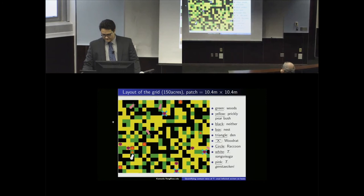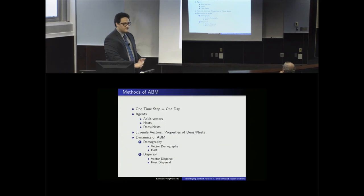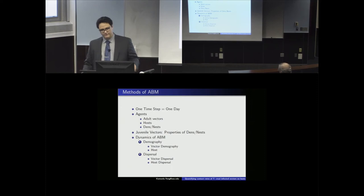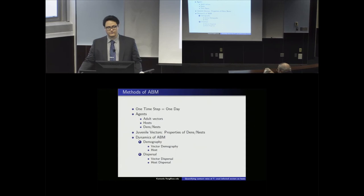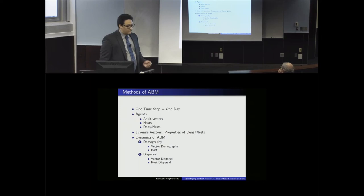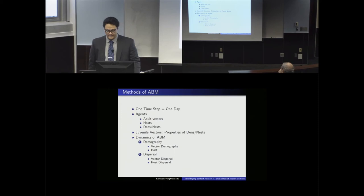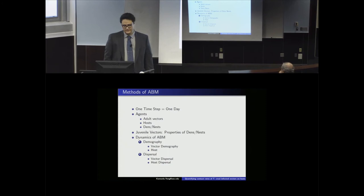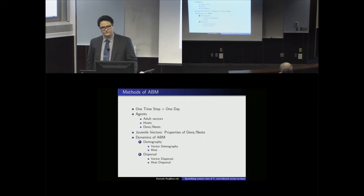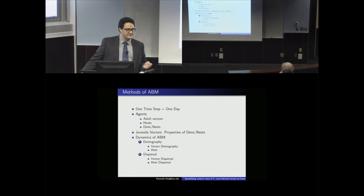Each patch is 10.4 meters by 10.4 meters, representing the average distance between two dens. The whole grid represents 150 acres. Each time step in the agent-based model represents one day. We only care about when vectors are feeding on hosts — when hosts are resting. During the daytime, hosts forage, and at the end of the day we take a time step. Each agent is a den or nest containing raccoons or wood rats. Juvenile vectors, unlike adult vectors, don't move, so they are modeled as a property of the den rather than as independent agents.